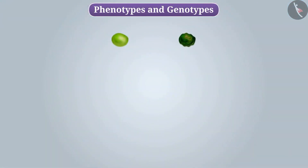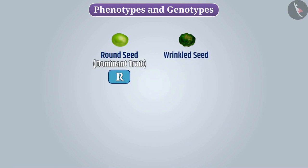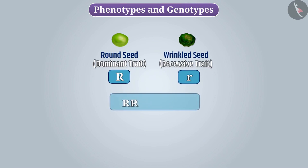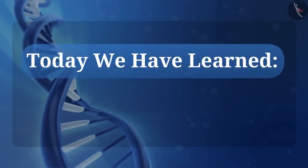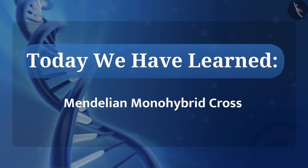Now, suppose if the round trait expressed as R is dominant for seeds and the wrinkle trait expressed as r is recessive, then what will be the result of breeding between a plant having RR genotype and a plant having rr genotype? Try this with the help of the Punnett square. So today we have learnt Mendelian monohybrid cross.